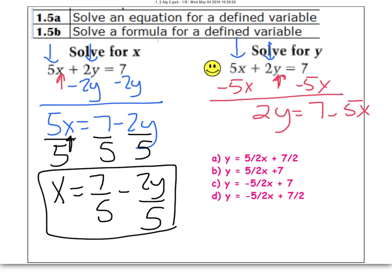To get rid of the 2 that's being multiplied on the y, I just divide by 2 on both sides. Divide everything by 2. So when you simplify this, you're going to get y equals 7 over 2 minus 5x over 2.